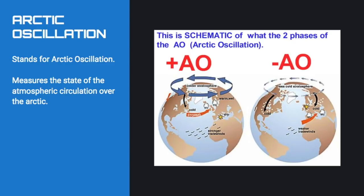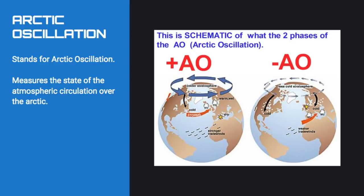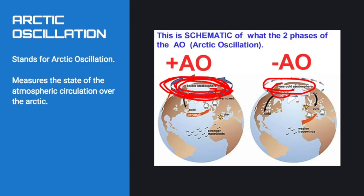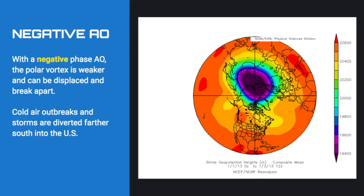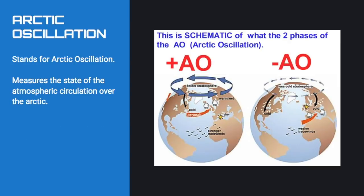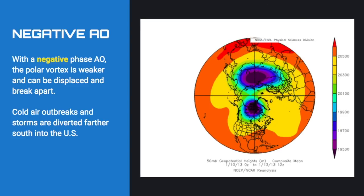The next factor is the Arctic Oscillation, which measures the stratospheric circulation up in the Arctic. When you get tighter circulation, the polar vortex stays locked up there — that's a positive AO. But when you get less circulation, the polar vortex can break off into pieces, become less organized, and dive south, shunting cold air south into the United States — that's a negative AO with weaker stratospheric circulation. A negative AO creates those cold air outbreaks into the central and eastern United States.